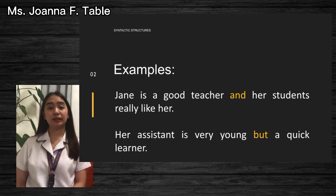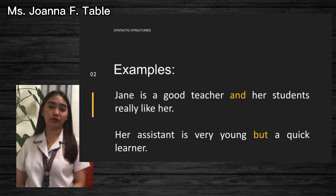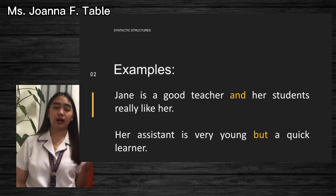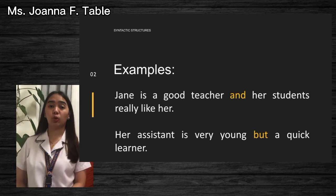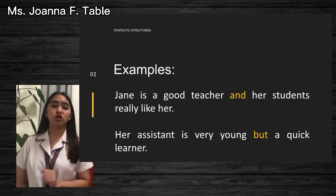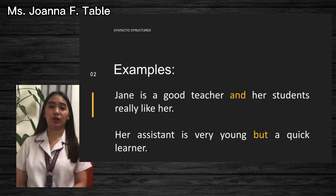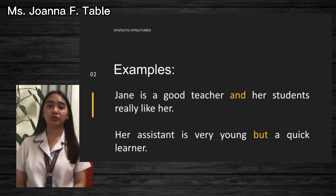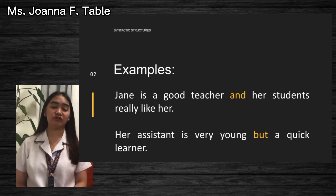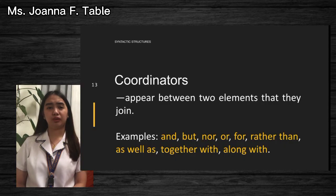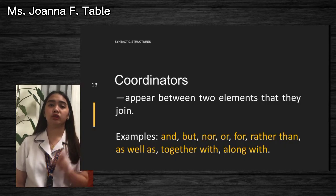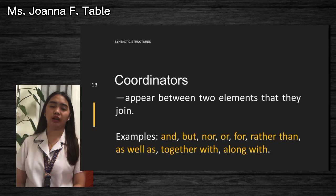As you can see in the examples, the highlighted words are 'and' and 'but.' Those are called coordinators. In the first example, we use 'and' because the situation shows both positive statements — 'and' can also be used if both statements show negative meaning. So what are coordinators? Coordinators appear between two elements that they join and often appear between the conjuncts.